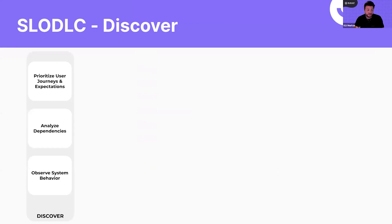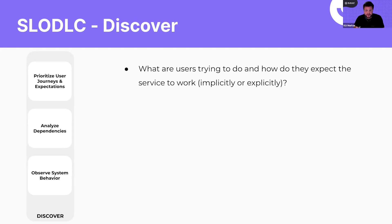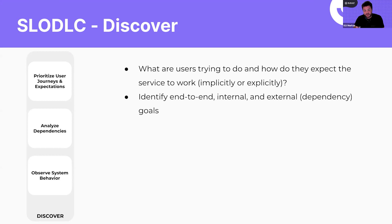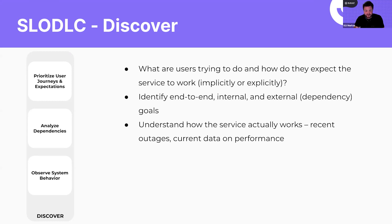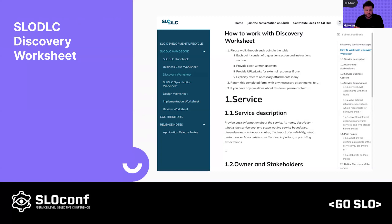After the Initiate phase, we do service Discovery. The Discovery phase is where we try to understand what the services need to do and make it a structured process for asking the right questions so we get good SLOs. What are users trying to do with your service? What are the user journeys and what do they expect? They may have explicit expectations like an SLA, or implicit expectations based on other products in the market. We identify end-to-end goals — internal goals for services we're responsible for and external or dependency goals. We also look at recent outages and available data to understand how the system works currently. There's a Discovery Worksheet available on slowdlc.com.